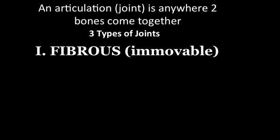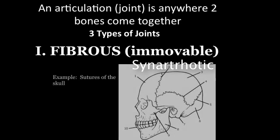The first is called a fibrous joint. These are immovable — another name for an immovable joint is a synarthrotic joint. These joints are so named because fibers of collagen actually hold the two bones together. Examples of these would be sutures in the skull. An infant skull has a membrane between the plates, and as the skull matures these bones fuse together; they no longer move, but fibers hold them together.